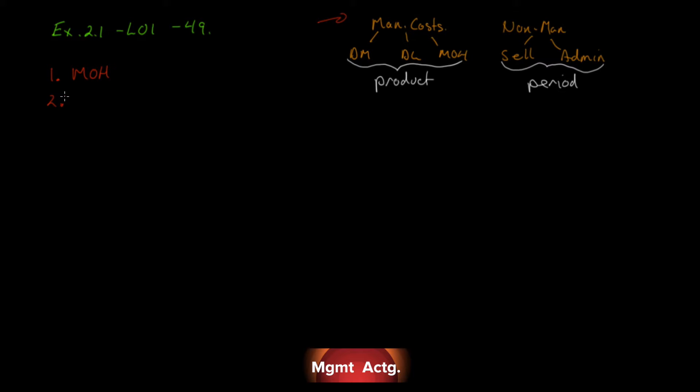Number two: rent on the office space used by the non-manufacturing staff. It's non-manufacturing, so it's either selling or administrative. Reading it doesn't give us a clear hint — the non-manufacturing facility has both sales and administrative staff. So if you put down selling, I'll take it; if you put down admin, I'd take it. The question says 'most likely' — you could put selling or admin, or both, since they share the facility and must split the cost somehow.